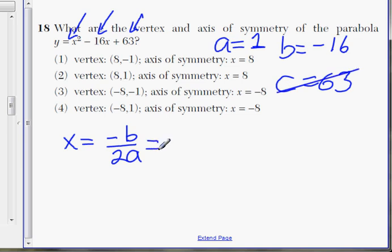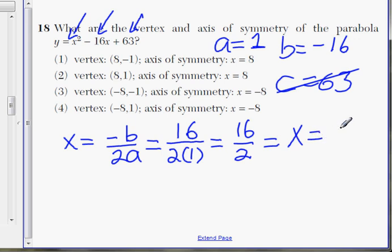Let's plug it into the formula. Well, b is negative 16. What is negative b? A negative b will be a negative of a negative 16, and that will be a positive 16. a is 1, so we'll just put 1 down here, times 2. So it's 16 divided by 2. Your axis of symmetry, x equals 8.